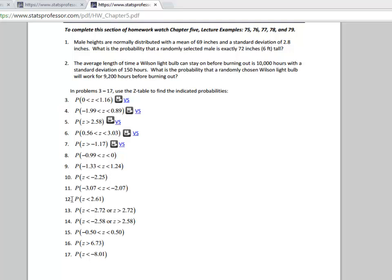Alright, so you're doing problem 12 in section 5.1, and it's asking for the probability that z is less than 2.61. We're looking for the probability that z is less than 2.61.